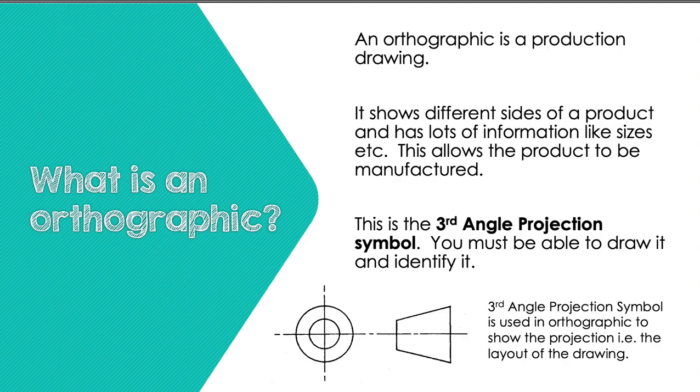So what is an orthographic? An orthographic is a production drawing and it shows different sides of a product and gives all the information like the sizes so that the product can go and be manufactured. In S1 to S3 you may have been given a technical drawing in design or woodwork. Those are orthographic drawings, so it's each side of the object that you're making with all the sizes so that you can go away and manufacture it.